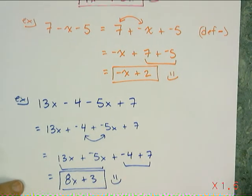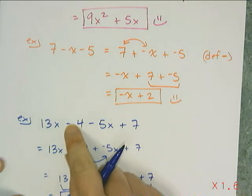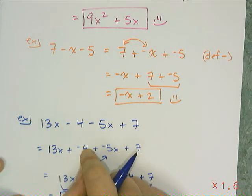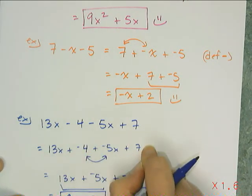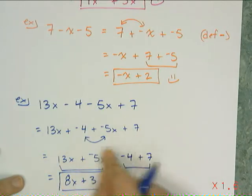That's combining like terms. Now, remember, whenever you have a subtraction, you have to change it to adding the opposite, so that you can rearrange things in such a way that the like terms are together.